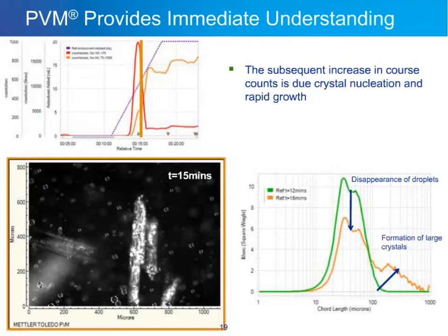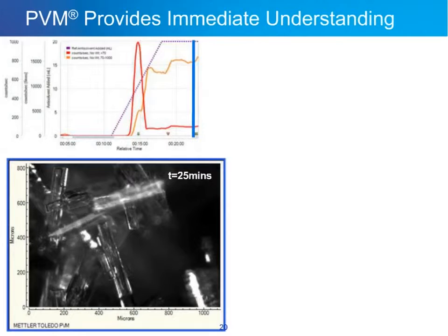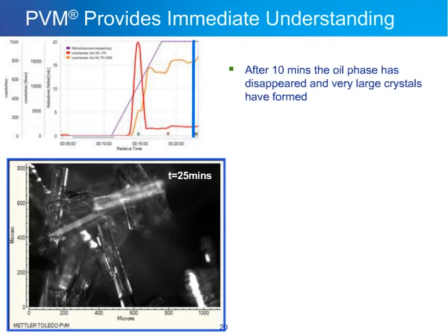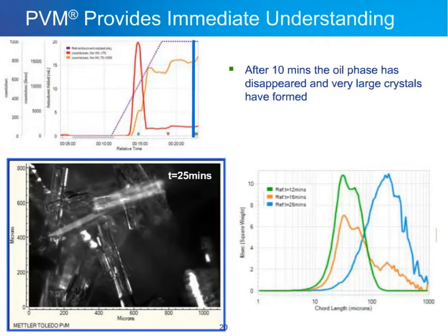This correlates with the FBRM data: a decrease in the distribution around 40 microns as the oil phase disappears, and an increase above 100 microns as crystals form. By the end of the crystallization at about 25 minutes, only large crystals remain with no oil phase present. The FBRM distribution shows the oil phase completely gone and significant crystal growth. PVM also shows significant agglomeration, probably due to the high supersaturation that caused the oiling out.